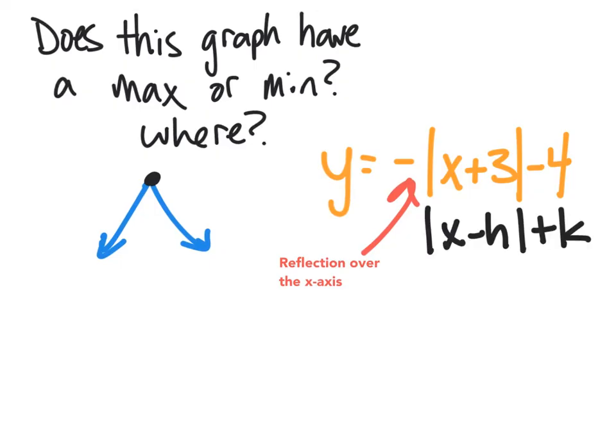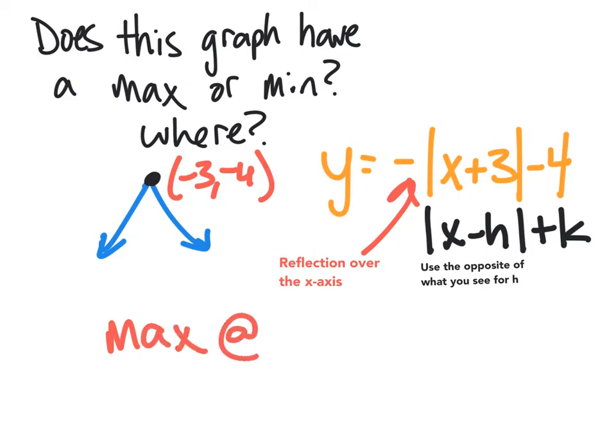And now we just got to say, where is that vertex? So remember that the vertex is at (h, k) and the definition says x minus h. So you're always going to take the opposite of h. And that's just like transformations whenever the inside moves right and left, right? This is going to go left 3 and down 4. So this vertex point is going to be at (-3, -4). So we could say that this has a max at (-3, -4).